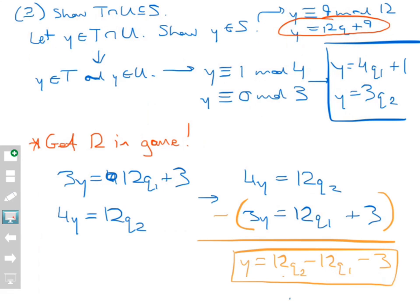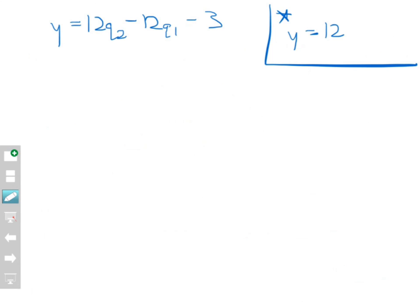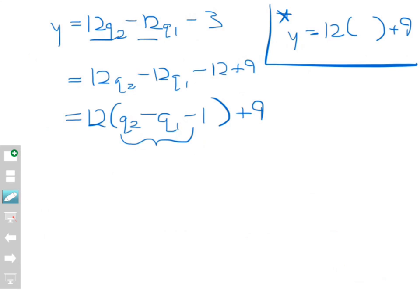Continuing: Y equals 12Q₂ minus 12Q₁ minus 3. My goal is to write Y equal to 12 times some integer plus 9. I see the 12s but I have a minus 3. I can rewrite minus 3 as minus 12 plus 9 — since minus 12 plus 9 equals minus 3, I haven't changed anything. Now I can factor off a 12, giving Y equals 12 times (Q₂ minus Q₁ minus 1) plus 9. By closure, this is an integer, so I've written Y equal to 12Q plus 9 for some integer Q.